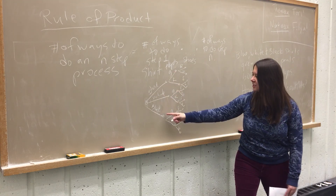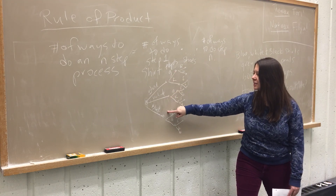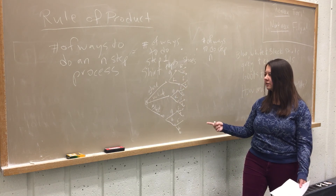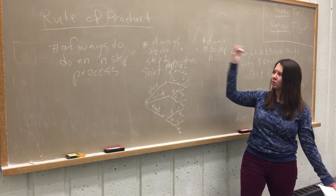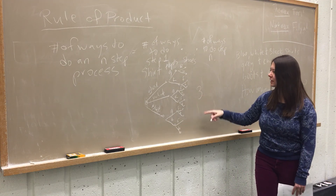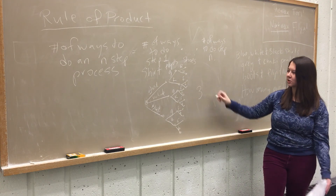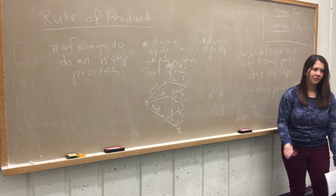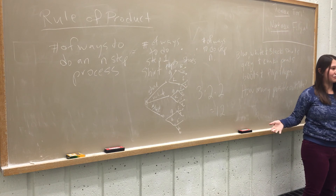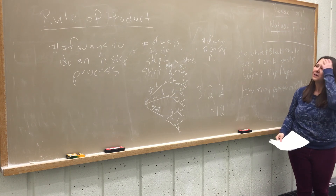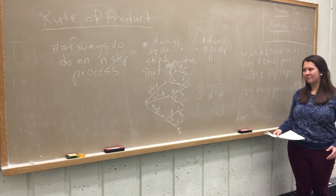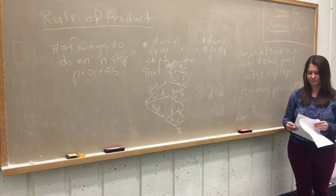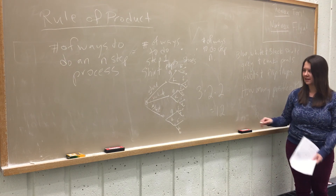Why are there 12? Because at each stage, for everything in the previous stage, we multiply by the number of things in the next stage. So rather than drawing out this whole tree, we could just use this rule of product and say: three ways to choose a shirt, times two, times two — for a total of 12. It's a straightforward concept we all use everyday, but we want to make it explicit because we're going to be using it more technically.